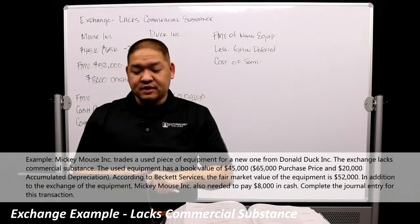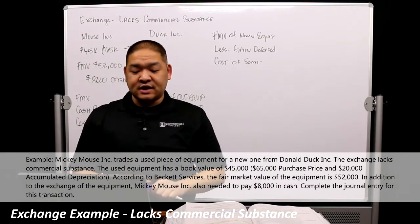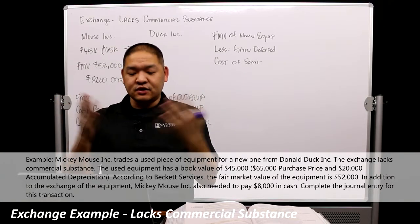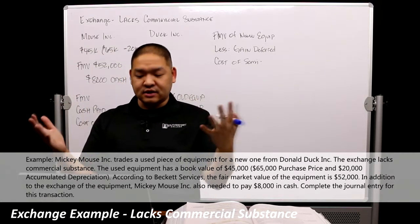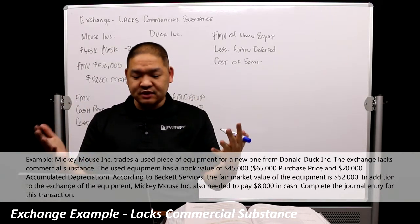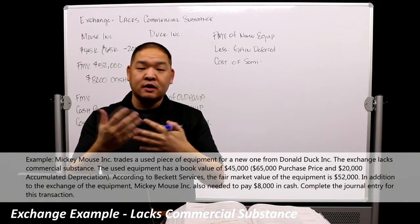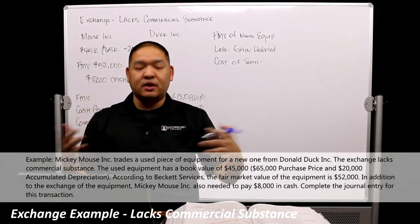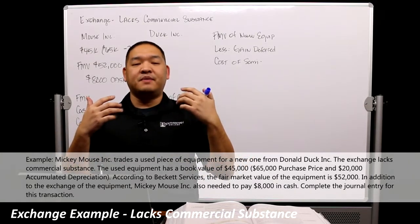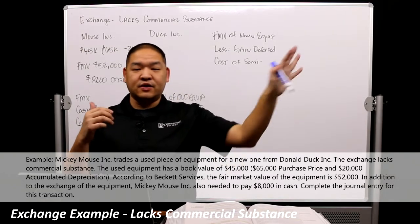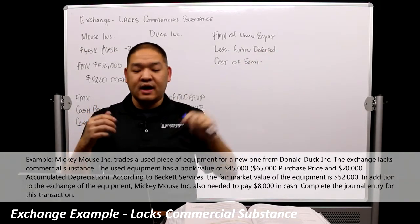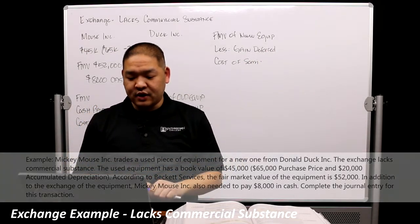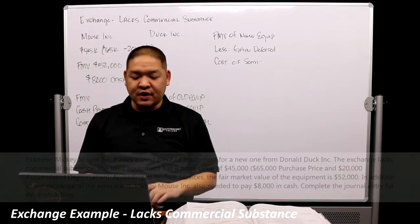Mickey Mouse also needs to pay $8,000 in cash. This still lacks commercial substance because he's paying a little more for a slightly better product — both are used equipment, but this one has a few more features, so Mickey Mouse is going to pay $8,000 more. The task is to complete the journal entry for this transaction.